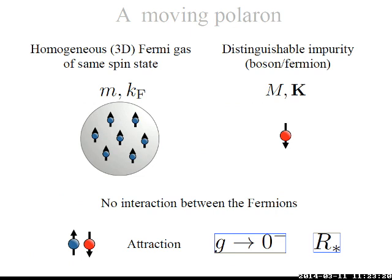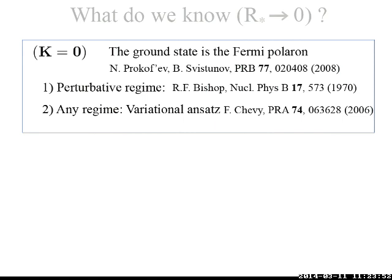In the last part of the talk, I consider the case in which the impurity is now moving with wave vector capital K. There is no interaction between the fermions, and between the impurity and fermion we have a weak attraction, so we can use perturbation theory with R star fixed. When R star tends to zero and the impurity is at rest, the ground state is the Fermi polaron, calculable via the Chevy ansatz or via perturbation theory as introduced by Bishop in the 1970s.